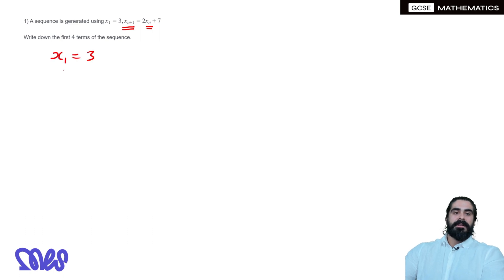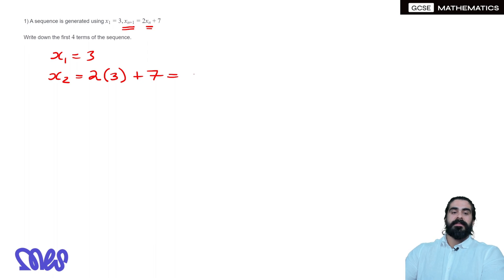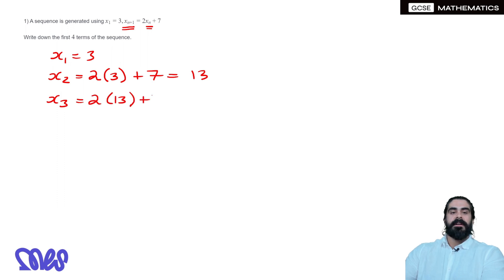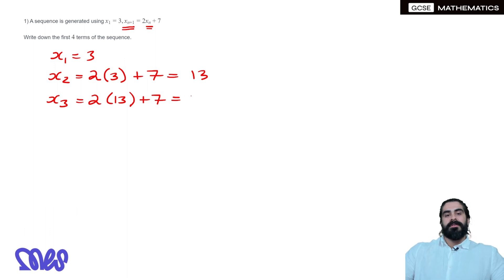If the first term is 3, to find the second term we do 2 times the previous term and then add 7. 2 times 3 is 6, plus 7 is 13. To find the next term we do 2 times the previous term, which is now 13, and then add 7. So 2 times 13 is 26, plus 7 which is 33.